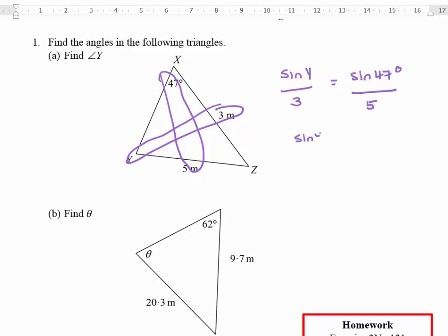So now I've got sine Y equals and I'm going to multiply by 3 so this becomes 3 sine 47 degrees over 5, and because I'm trying to find Y by itself I'm going to do shift sine on my calculator and then I can place everything in my calculator all in one step over 5, and I'm going to get therefore that angle Y in this case is 26.0281 degrees, which is 26.0 degrees to 3 significant figures.